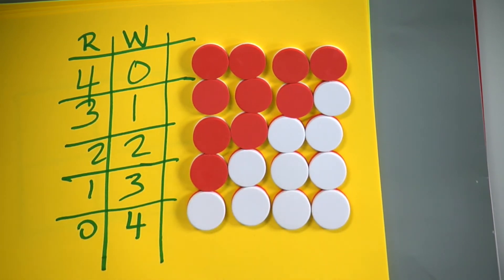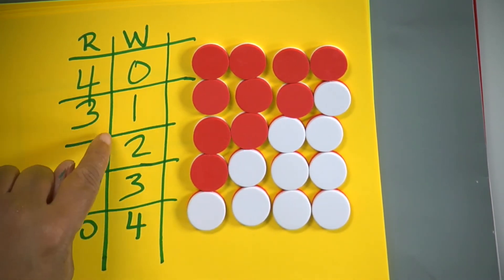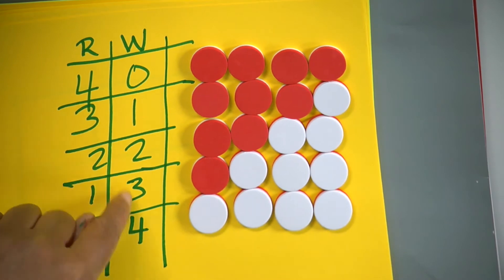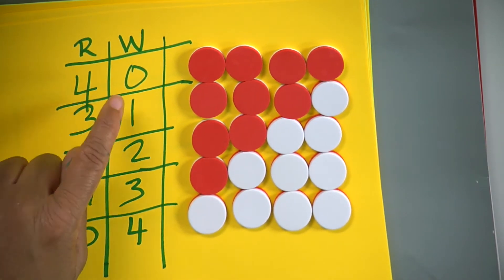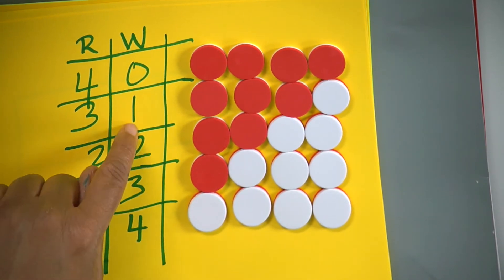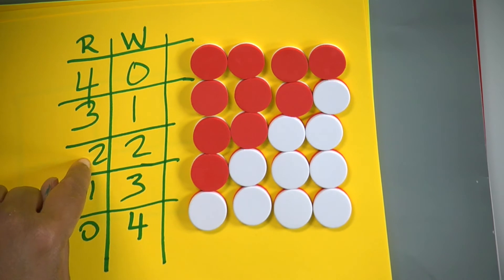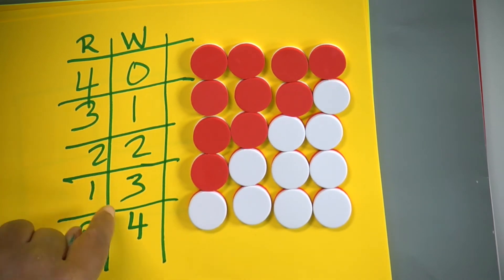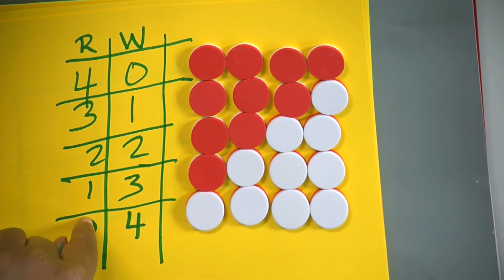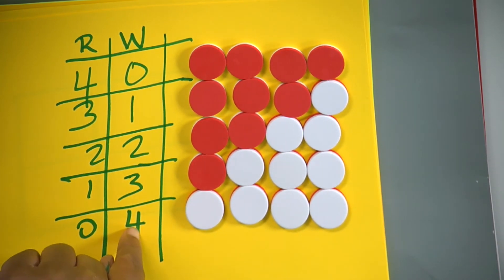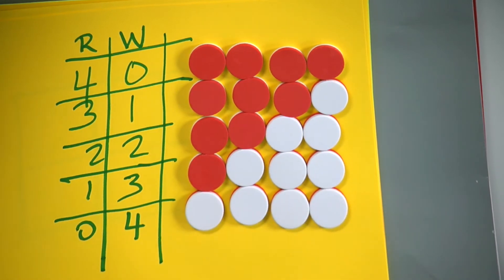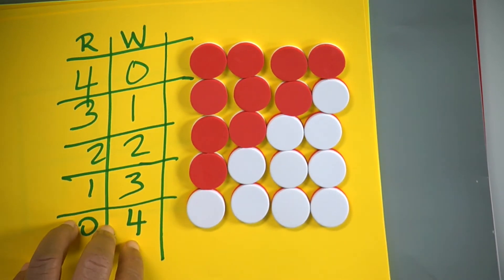Or there could be two red and two white, one red and three white, or four white and no red. Depending on the grade, I would have them write the table: four red, zero white; three red, one white; two red, two white; one red, three white; zero red, four white. The kids can see that and then they see the abstract representation of it. The question is: what are all the possible combinations? That's a both-add-ins-unknown problem.